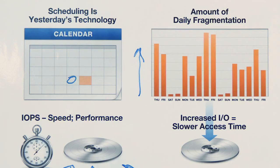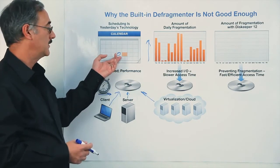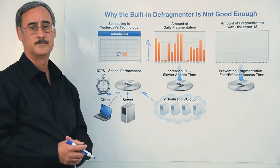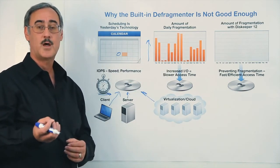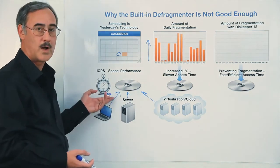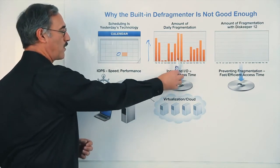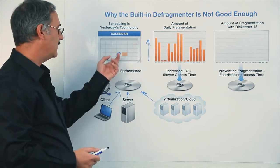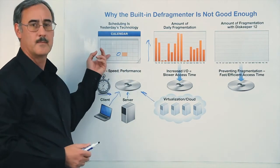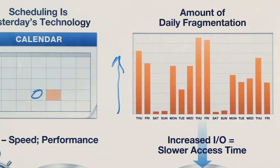The built-in defragmenter at best comes along once a week, usually on a Wednesday at one o'clock in the morning. So if your computer system happens to be turned on, the Windows built-in defrag utility will come along and try to clean up the fragmentation. But you've already experienced a performance penalty, because that fragmentation did incur more I/Os and it took longer to access the data. With each passing day you're incurring more and more I/O traffic. If I'm working on a project on Tuesday afternoon, how is running the built-in defrag Wednesday at one o'clock in the morning really going to address and fix my particular problem?